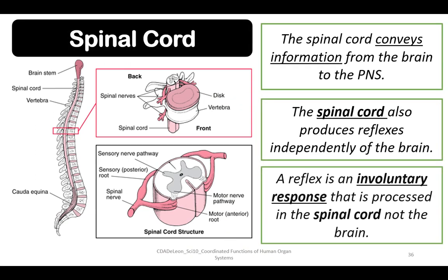Now let's discuss the spinal cord. The spinal cord conveys information from the brain to the peripheral nervous system. The spinal cord also produces reflexes independently of the brain — these are impulses that do not go directly to the brain but are processed in the spinal cord, and that's what we call reflexes.